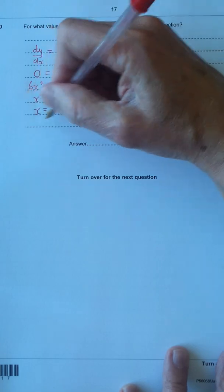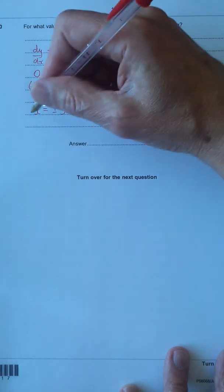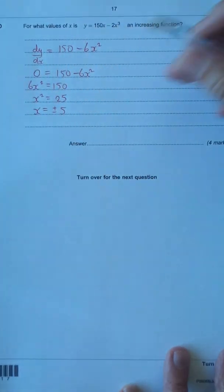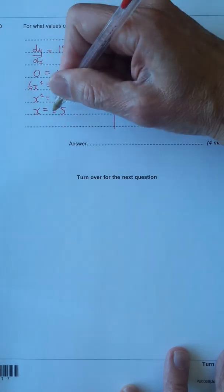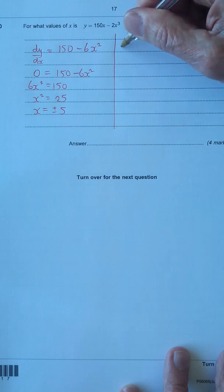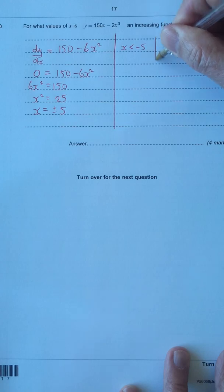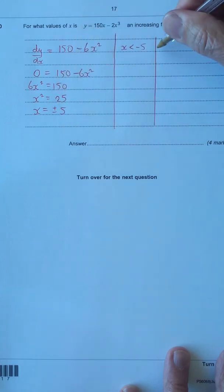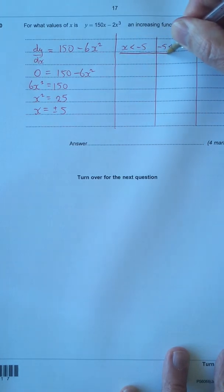Now the turning points are here, so what we need to do now to find whether it's an increasing function is look either side of the 5 and in between these values. Let's set up a table. We've got negative 5 is the smallest value, so I'll have x is less than negative 5, and then between negative 5 and 5, and the last one x is greater than 5. That covers everything.